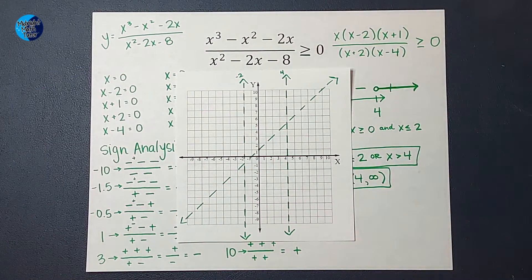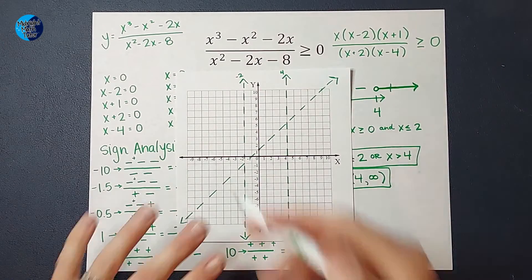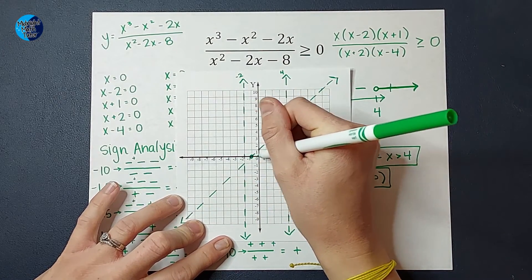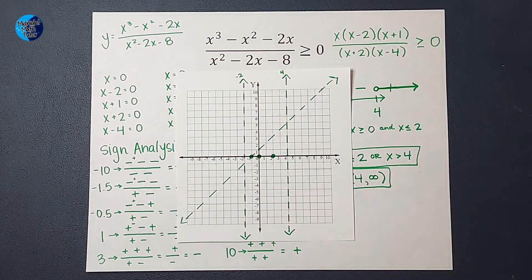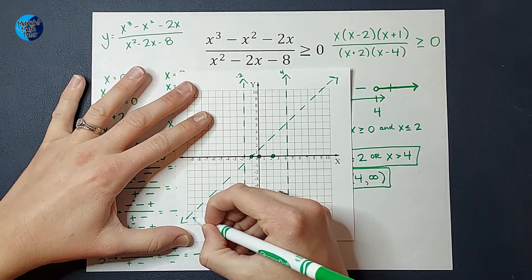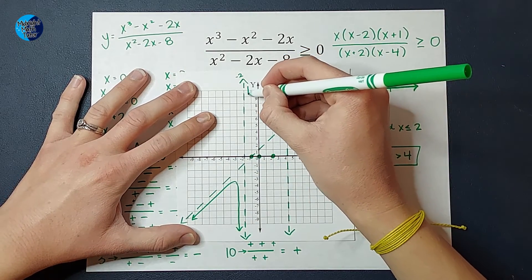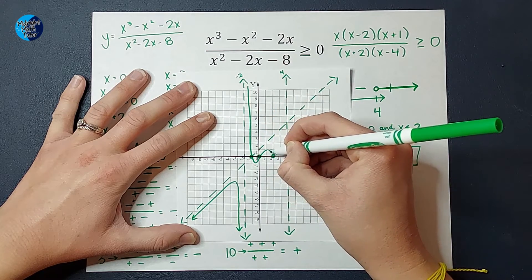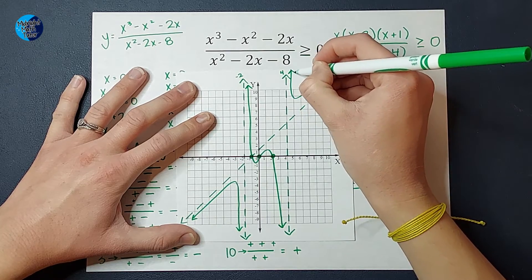There are the vertical asymptotes at 4 and negative 2. By looking at my degrees, I would figure out there's not a horizontal asymptote — there is a slant asymptote at y equals x plus 1. Then I would figure out my x-intercepts, finding they are at negative 1, 0, and 2. By applying what I know about functions and asymptotes, I would figure out what this graph looks like.